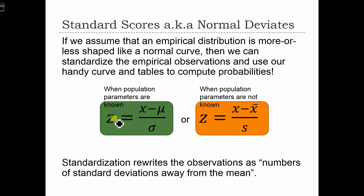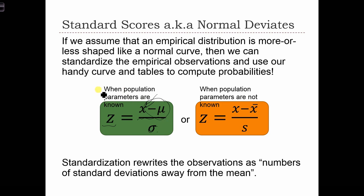In order to transform a raw variable like house price X into a Z-score, we subtract the mean of the distribution from X and divide by the standard deviation. We use mu and sigma if the population parameters are known, but if we're estimating those population parameters from a sample, we standardize the values using x-bar and the sample standard deviation.